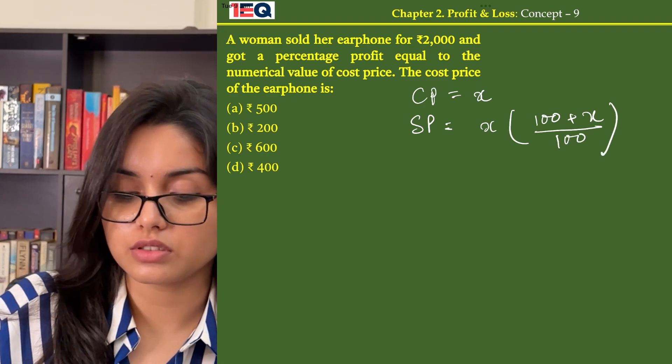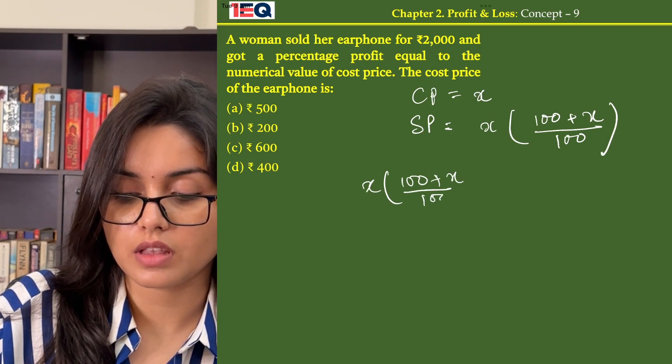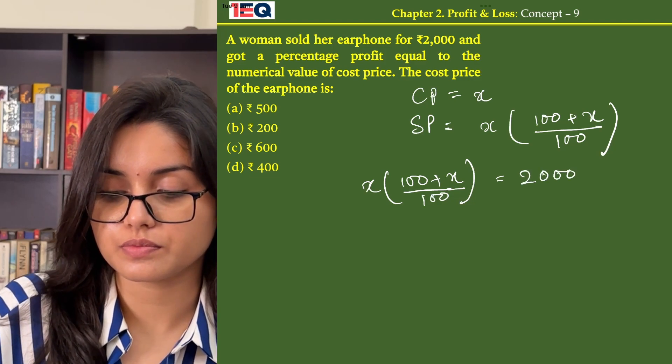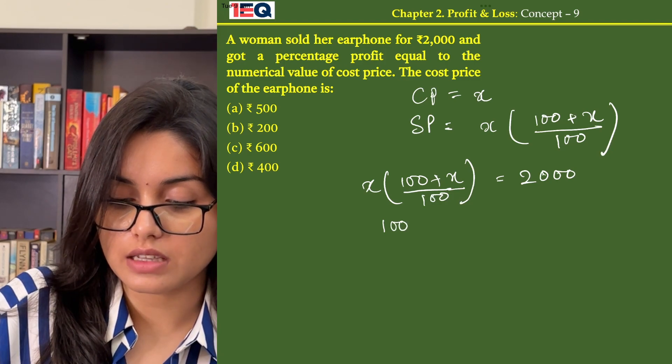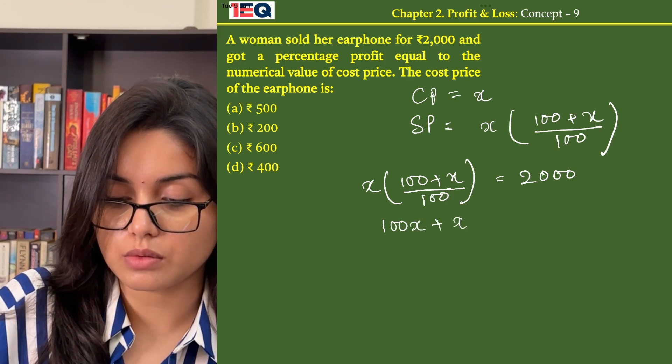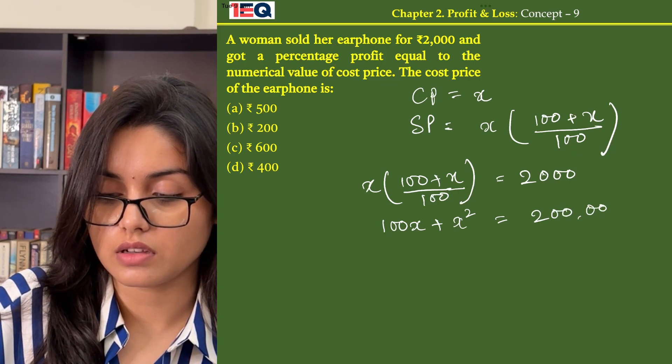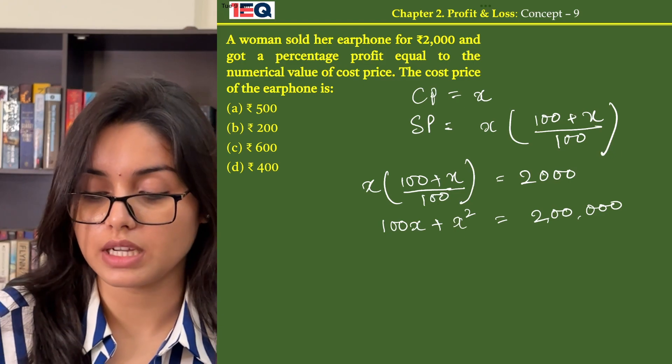Now according to the question, x into 100 plus x by 100 is equal to 2000. On solving this we get 100x plus x square equals to 2 lakh. 2000 into 100 becomes 2 lakh.